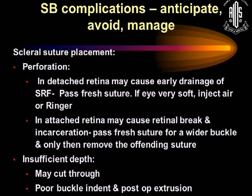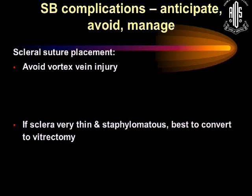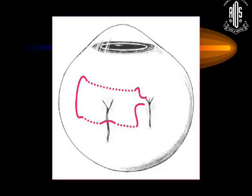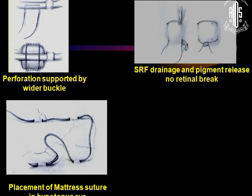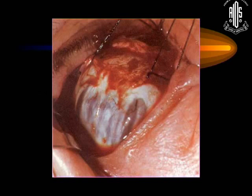Perforation in detached retina is not a big issue — you can pass a fresh suture. If the eye is very soft, you may need to inject air or Ringer's. If it's in attached retina, it's a bigger problem — you'll likely have a retinal break or incarceration, so pass a fresh suture for a wider buckle and only then remove the offending suture. To avoid vortex vein injury, you can go over it or even under it to the other side. If the sclera is very thin and staphylomatous, convert to vitrectomy. In a hypotonic eye, you may take two shorter bites for the buckle indentation.